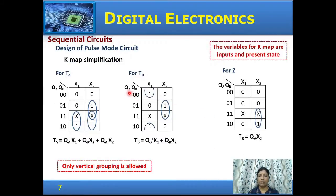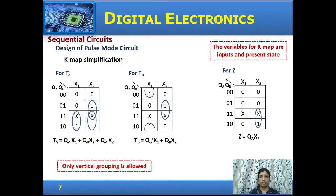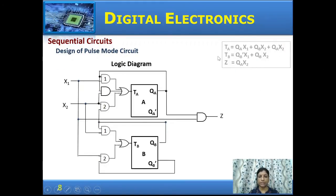From the excitation table, for the TA and TB inputs to the flip-flops and for the output, we get the logical expressions using kmap, where the inputs and present state are the variables. Note that only vertical grouping is allowed in the kmap, because x1 and x2 are different inputs and pulses are given to each separately. From this, we get the expressions for TA, TB, and Z. From these logical expressions the logic diagram is drawn, using unclocked flip-flops or latches and the combinational circuit with inputs x1 and x2.